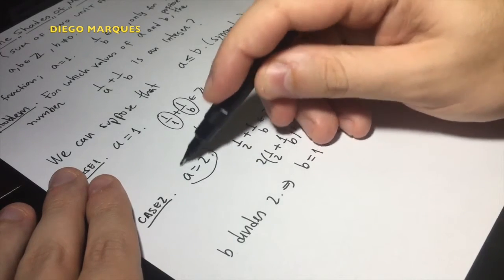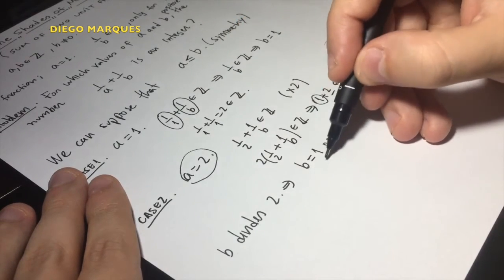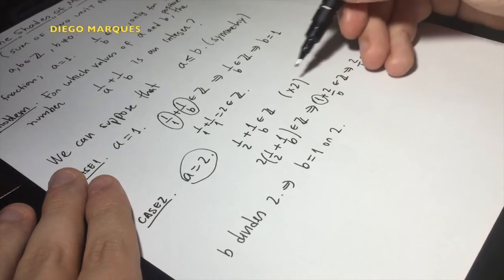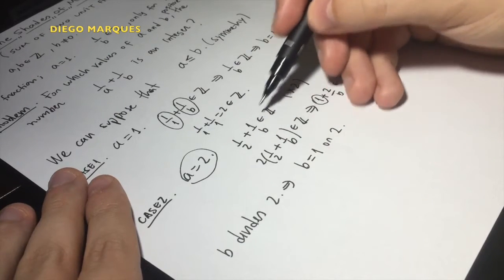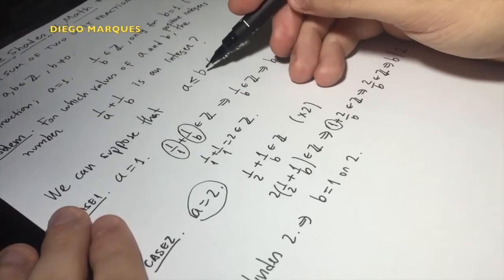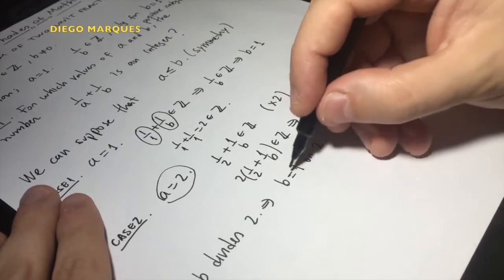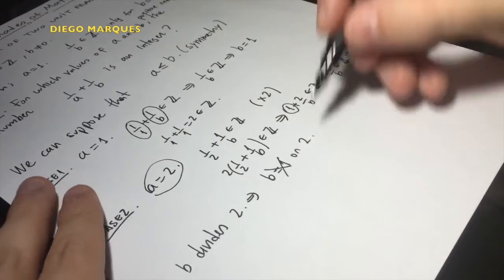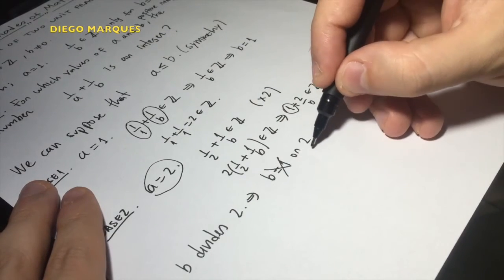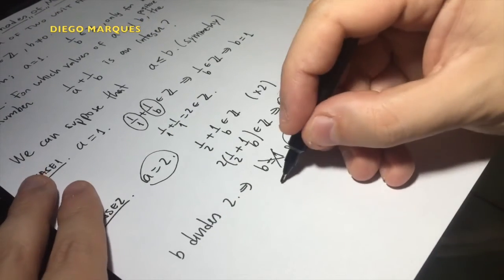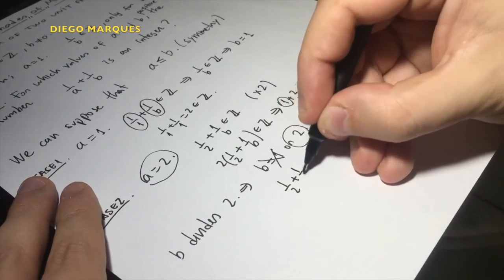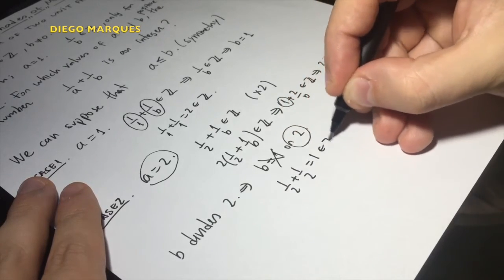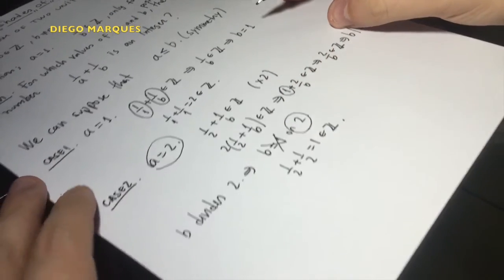Since a is equal to 2, b cannot be equal to 1, because the sum will not be an integer, and actually b must be at least a. So this case cannot hold. So b is another solution: 1 over 2 plus 1 over 2 is equal to 1, which is an integer.